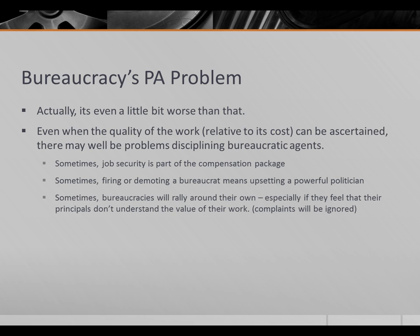But it's not just the quality of the good that's hard to ascertain — it's not just a problem of innovation. Even when the quality of the work relative to its cost can be ascertained, there may well be problems disciplining bureaucratic agents. We said that it might be difficult to get your local FBI agent fired, and that might be true even if it were fairly easy to contact his or her boss. Sometimes, job security is part of the compensation package, which can come in the form of public sector unions that protect the jobs of their members, or sometimes it's just part of an individual contract.